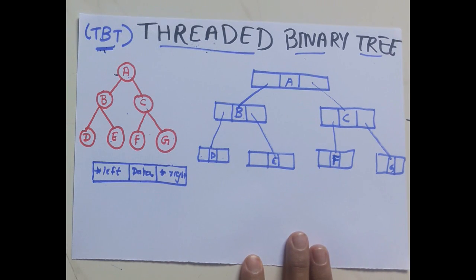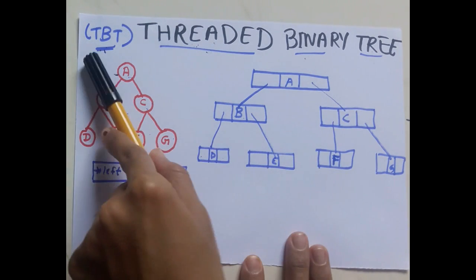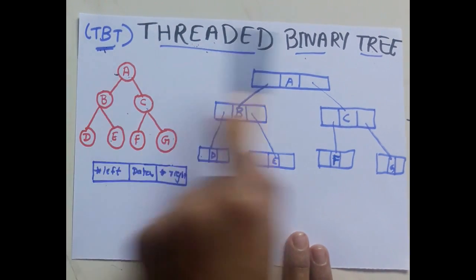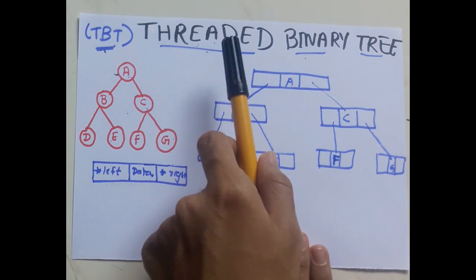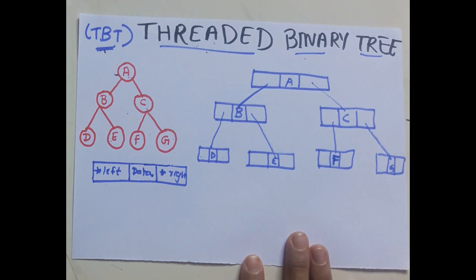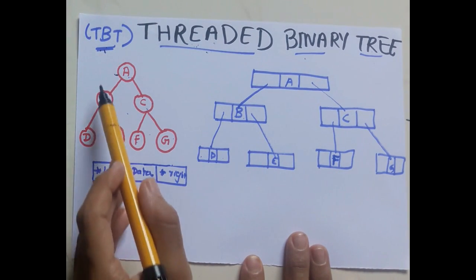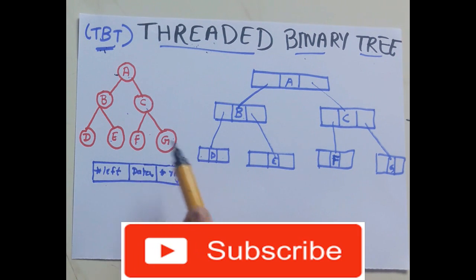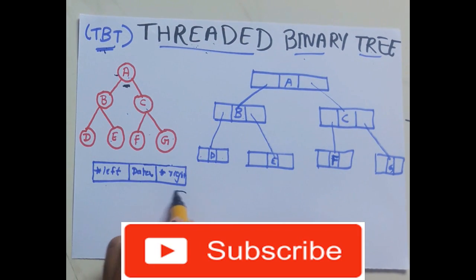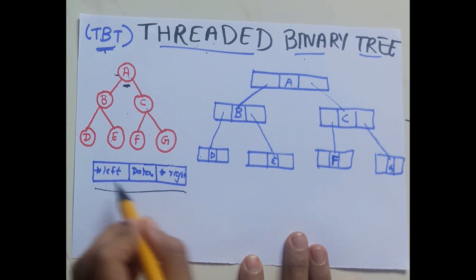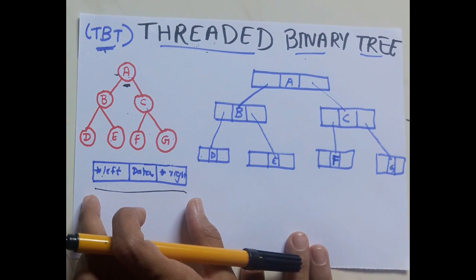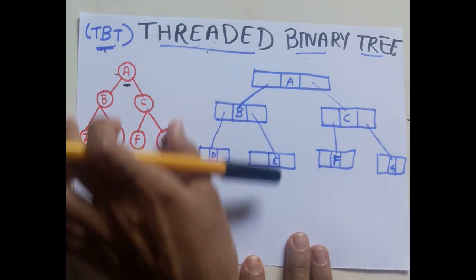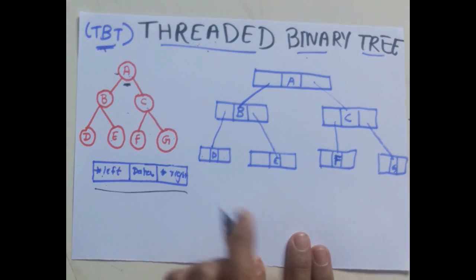Hello everyone, welcome to MGAcademy. The next topic in data structure is Threaded Binary Tree, also called TBT. We call this binary tree 'threaded' because in this binary tree we are going to create threads. This is generally how we represent a simple binary tree, but the nodes of a binary tree consist of three fields: data field, left pointer, and right pointer.